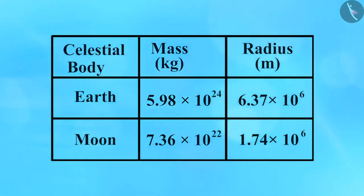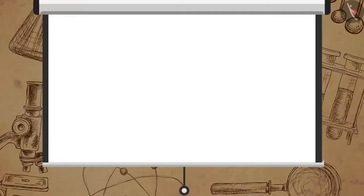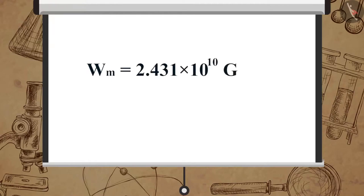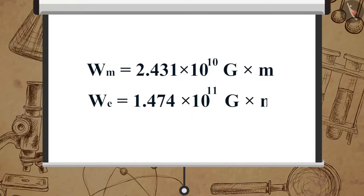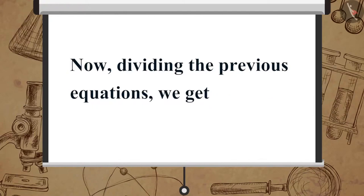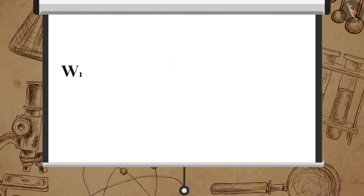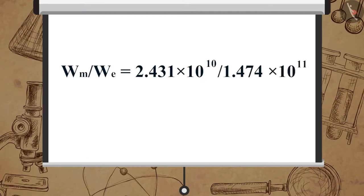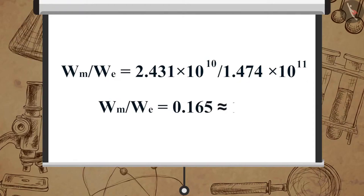Have a look at this table which gives us some information about the Earth and the Moon. By substituting the values from the table into the previous equations, we get W_m equal to 2.431 multiplied by 10 raised to 10 times G multiplied by m, and W_e equal to 1.474 multiplied by 10 raised to 11 times G multiplied by m. Dividing these equations, W_m upon W_e equals 2.431 times 10 to the 10 upon 1.474 times 10 to the 11, which equals 0.165, almost equal to 1 upon 6.